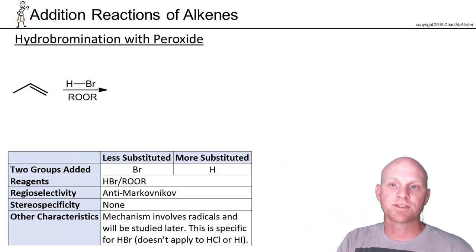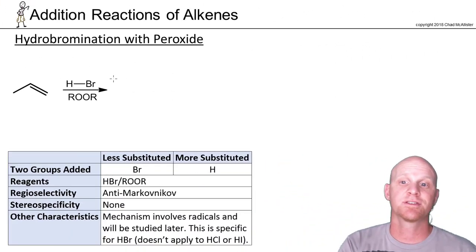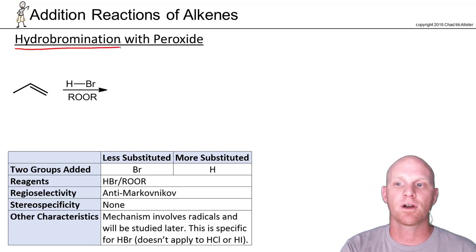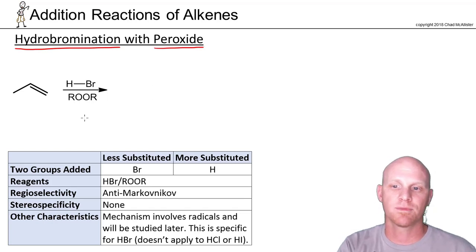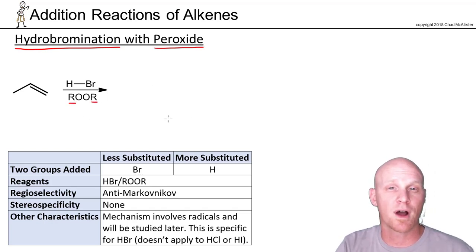The second reaction on our list is also another example of a hydrohalogenation. Specifically, this one is specific to HBr. When you add a peroxide to HBr, it actually totally changes the mechanism. ROOR here is the generic formula of peroxide. Those R's could be H's or any carbon chain. You'll most commonly see it written generically, but it could be very specific.